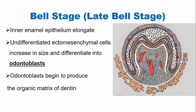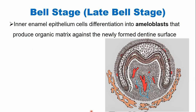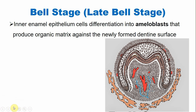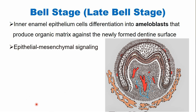As soon as the first layer of dentine is formed, the dental papilla is now called the dental pulp. The inner enamel epithelium cells differentiate into ameloblasts, which begin depositing the enamel matrix. This is also deposited near the cusp tips, and later the deposition continues downwards. There is a lot of epithelial-mesenchymal signaling during this differentiation, which we call reciprocal induction — the tall columnar cells release proteins that induce dental papilla cells to differentiate into odontoblasts, which in turn signal the tall columnar cells to differentiate into ameloblasts.